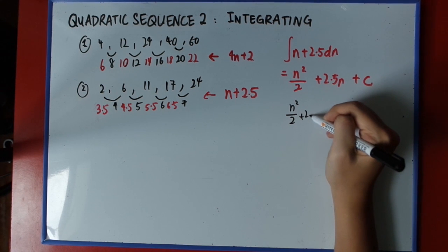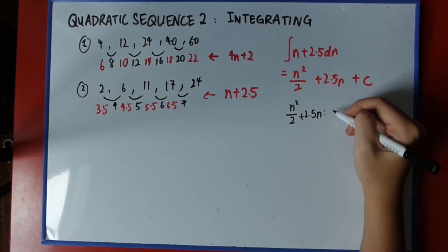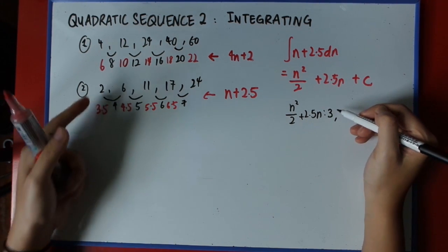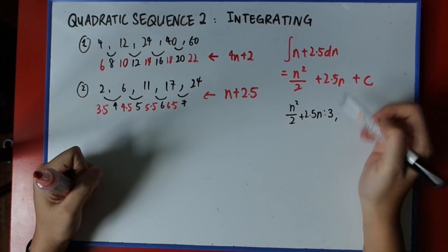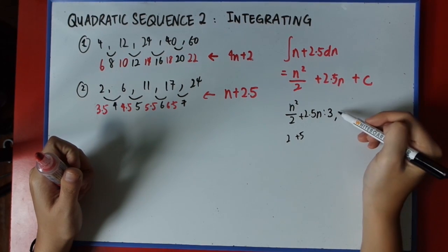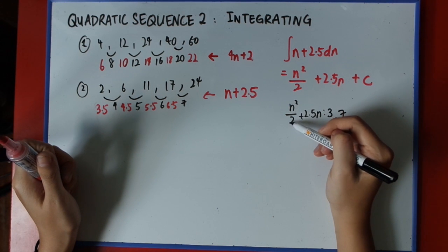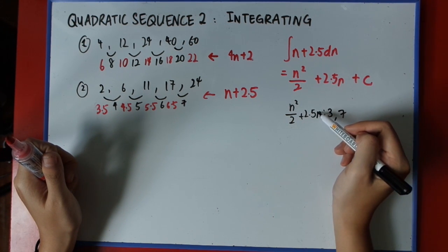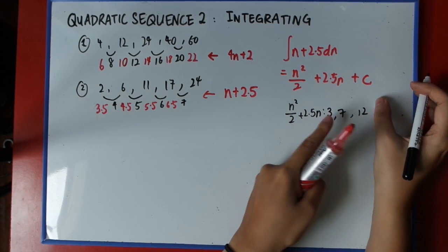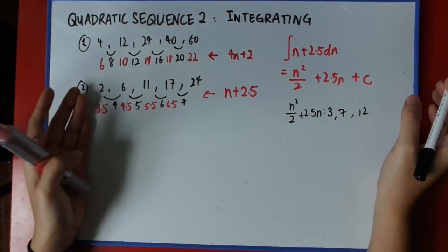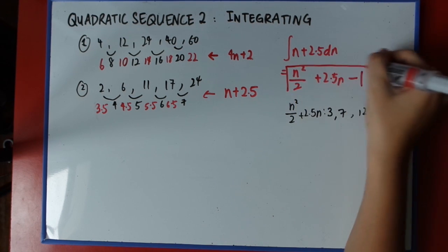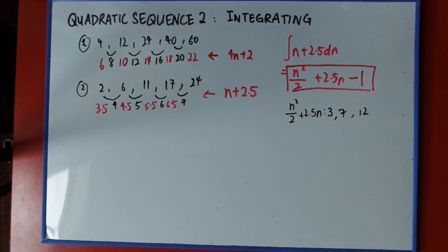Now that we have the red sequence, let's integrate this. You should get n squared over 2 plus 2.5n plus c. Of course you have to figure out what c is. Just substitute in — this sequence will be half plus half and half plus 2.5, starting with 3. Just knowing the first number is enough to tell you what c is. For n=2: 2 squared over 2 gives 2, plus 2.5 times 2 gives 7. For n=3: 3 squared over 2 is 4.5, plus 7.5, that gives 12. This entire sequence is one more than this, so by minusing 1 I'll get back the original. So c should be minus 1, and that is the answer.